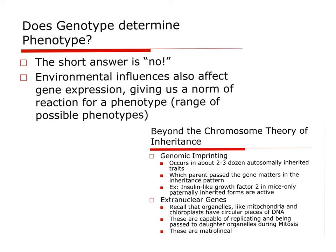Remember that genotype does not determine phenotype — it influences it. Environmental factors can affect gene expression. A classic example here in the South is the hydrangea bush: planted in acidic soil it flowers pink, planted in basic soil it flowers blue. That's the environment influencing the expression of the flower color gene. Don't forget that when solving genetics problems, it's easy to treat genotype as determinant, but environmental influences are always a factor.